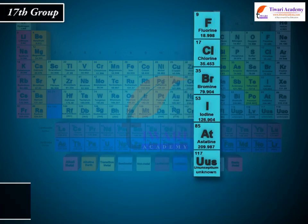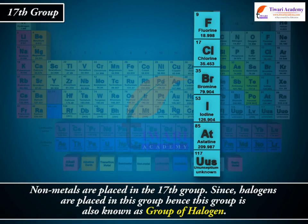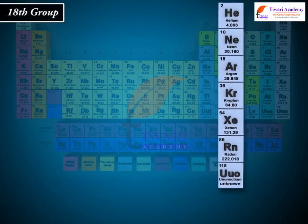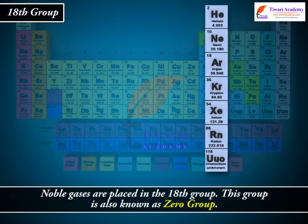Non-metals are placed in the 17th group. Since Halogens are placed in this group, this group is also known as Group of Halogen. Noble Gases are placed in the 18th group, also known as Zero Group.